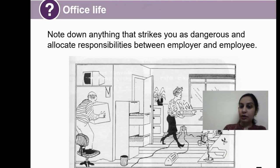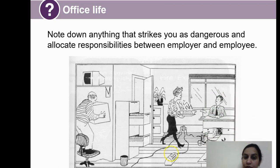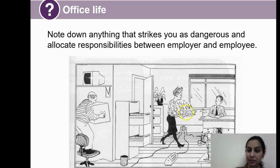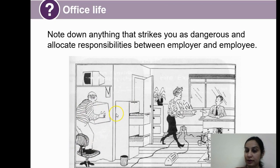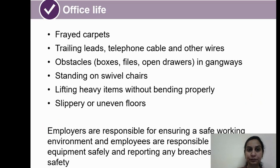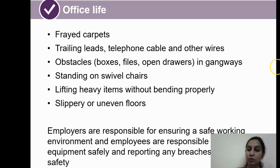Looking at a picture example: you can see wires on the floor, which is definitely not safe; a lady carrying a hot drink near cables; and a gentleman standing on a chair trying to reach something. This does not seem like a safe environment. Risky situations covered include frayed carpets, trailing leads, telephone cables on the floor, and standing on chairs — all very risky and should be avoided.